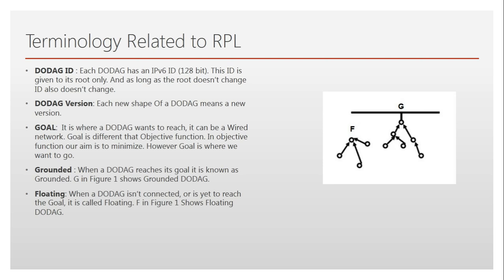A DODAG version refers to each new shape or topology of the DODAG. Since nodes can go to sleep or go offline for a period, the network will try to form a path another way. Each time the topology changes to a new shape, that is a new version. So each version — each new shape — is what DODAG version means.